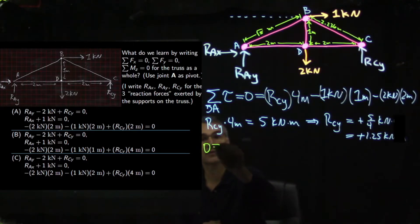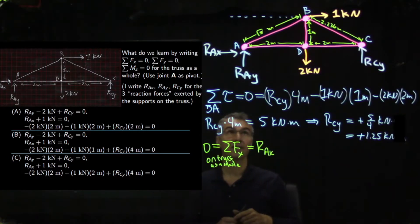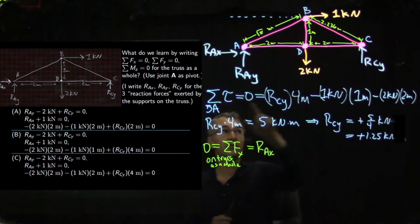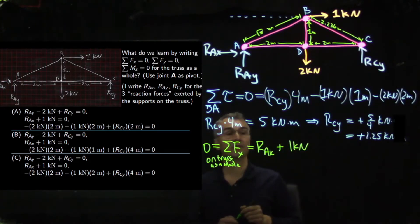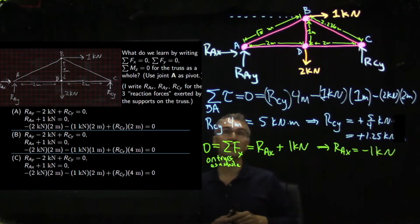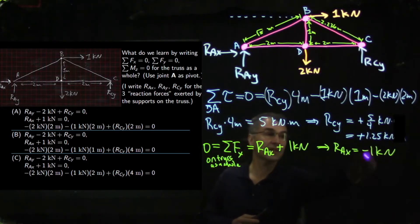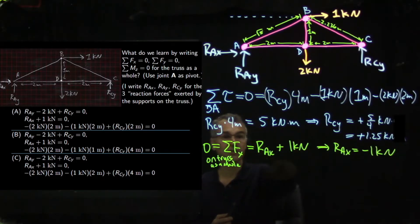Sum of forces in X on the truss as a whole equals zero. R-A-X is to the right, plus one kilonewton. This gives R-A-X equals minus one kilonewton. So we can either leave the arrow pointing right with a negative number, or redraw it pointing to the left with a positive number.